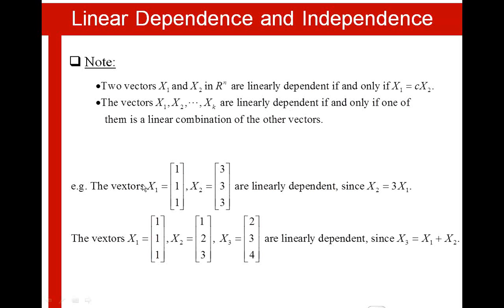So if we can write one of the vectors as a linear combination of the others, then these vectors are linearly dependent. For example, the vectors X1 and X2, which are (1,1,1) and (3,3,3), are linearly dependent since X2 equals 3·X1. Similarly, the vectors X1, X2 and X3 are linearly dependent since X3 equals X1 plus X2.